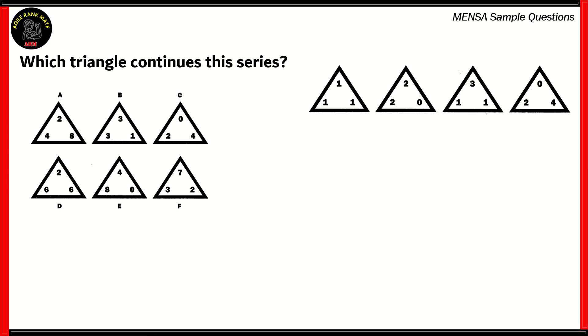Now let's look at another question. Which triangle continues this series? So the series is here, and these are our options. So we have a triangle saying 111, followed by 220, followed by 311, followed by 024. We need to find out which of these options would continue this series.